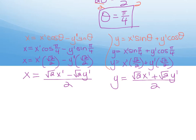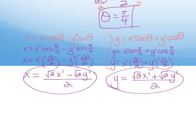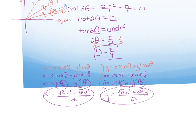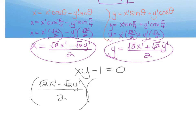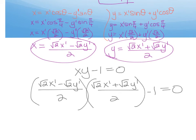The next step is to plug x and y back into the original equation xy minus 1 equals 0. Substituting, I get root 2 x prime minus root 2 y prime over 2, times root 2 x prime plus root 2 y prime over 2, minus 1 equals 0. The numerators are the same terms but one has a plus and one has a minus — so I can use the difference of squares shortcut.